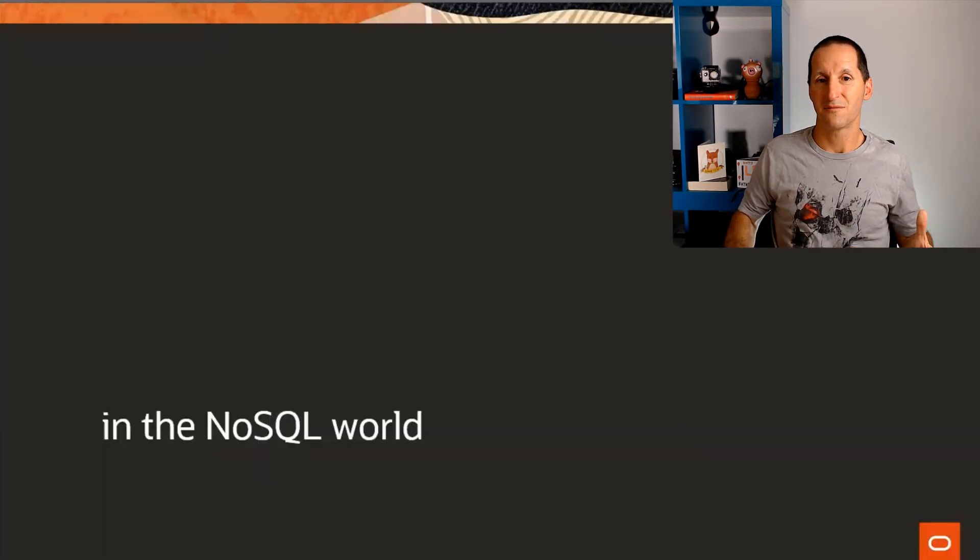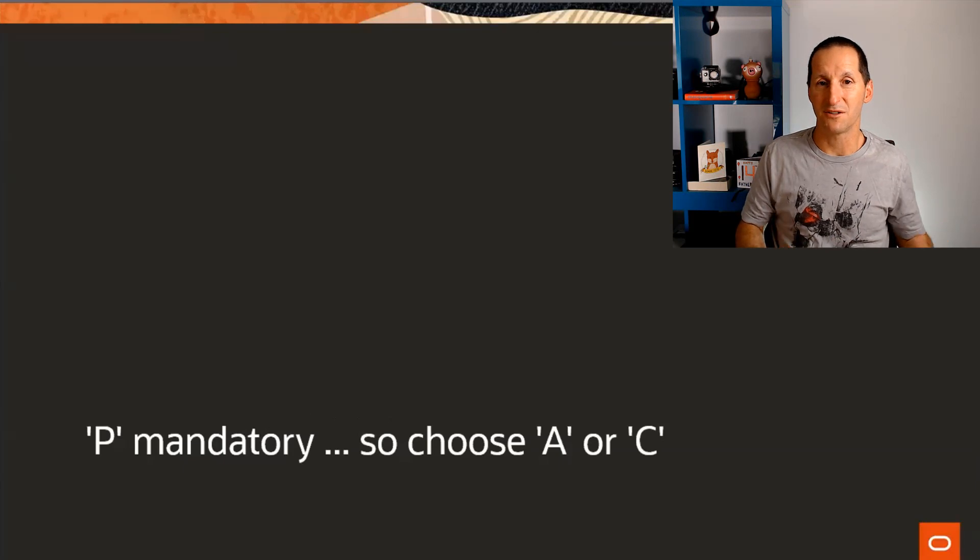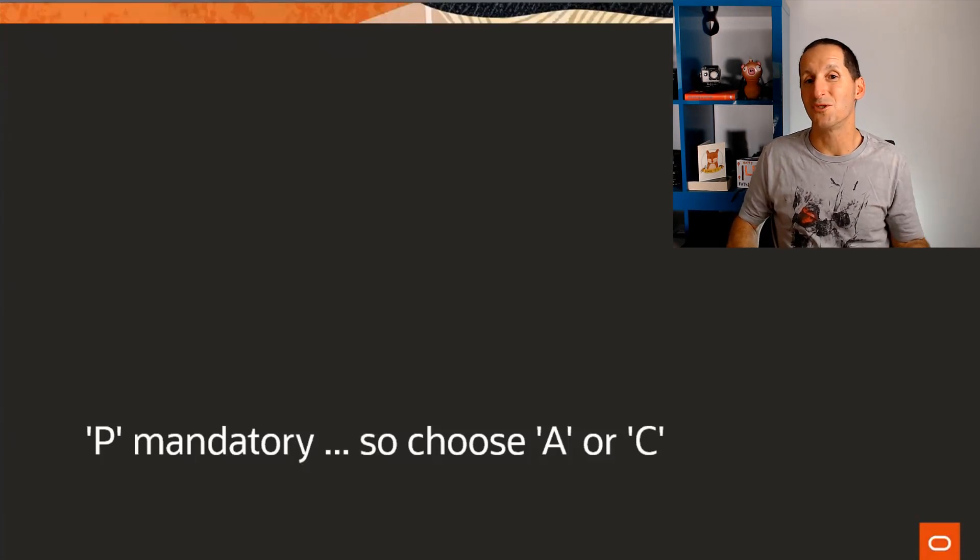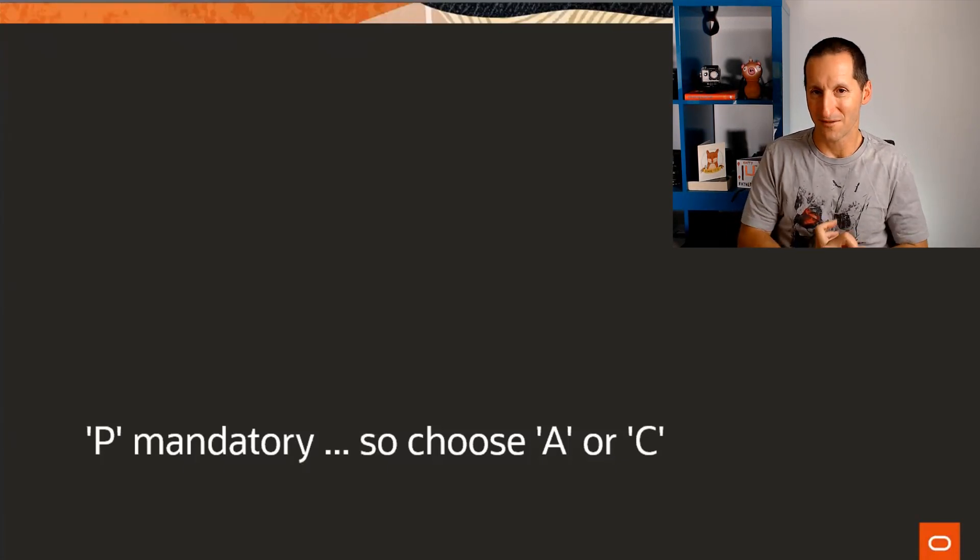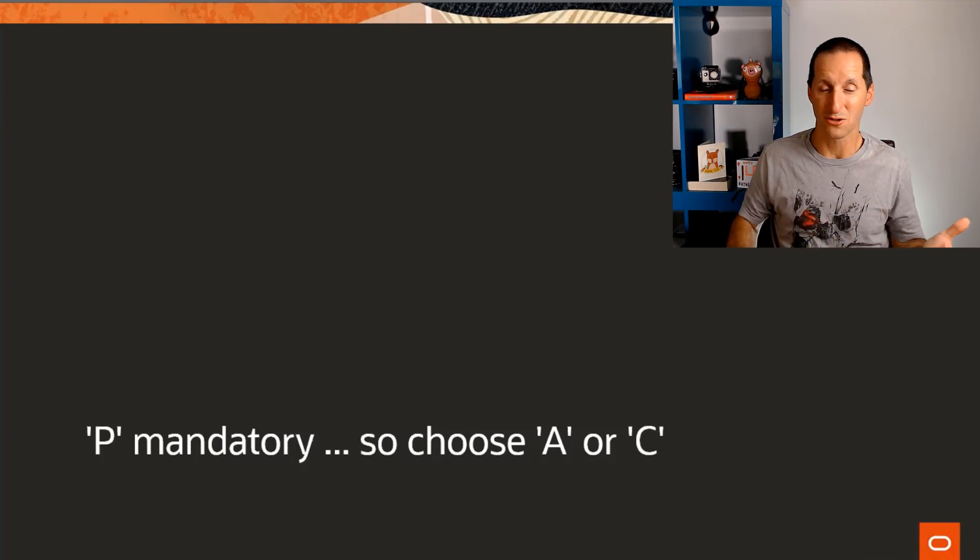So in the NoSQL world, as I said, we always have lots of nodes. So partitioning tolerance is a mandatory. You've got to have tolerance to partition failures because inherently in most NoSQL architectures, you've got hundreds or thousands of nodes and the data is partitioned across them. So you must choose. You have to lose one. You can choose availability, which is what most of them do, or you can choose consistency. Almost they all chose availability.